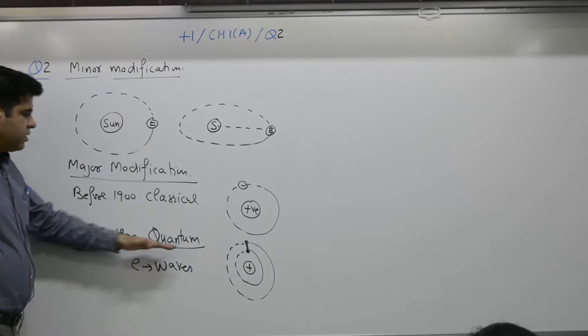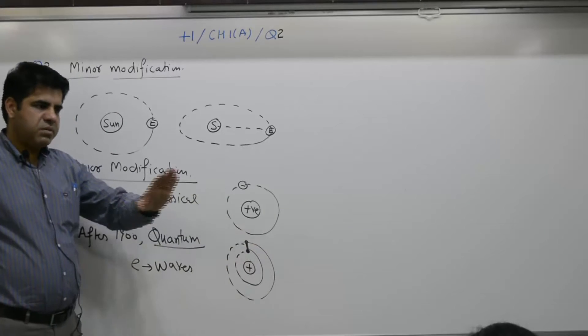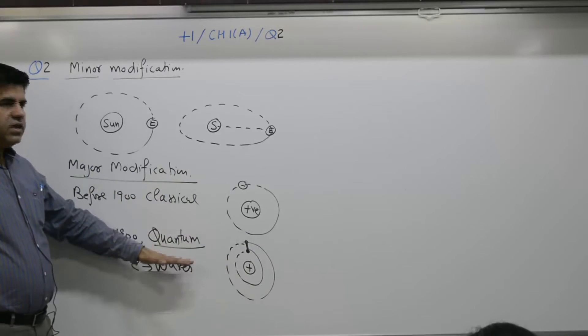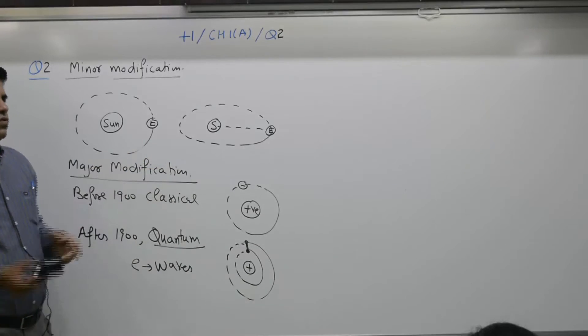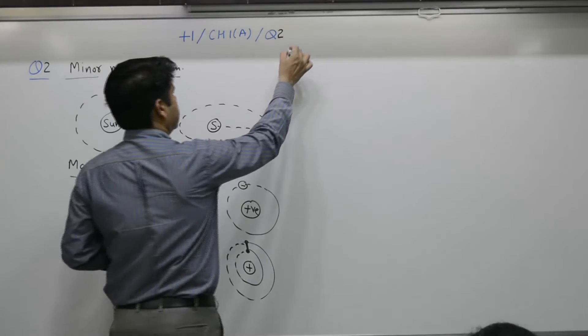Absolutely new theory, quantum theory - we take up in chapter number seven plus two - was given to explain atom. This is what we mean by major modification.